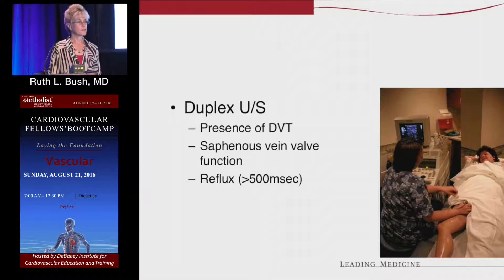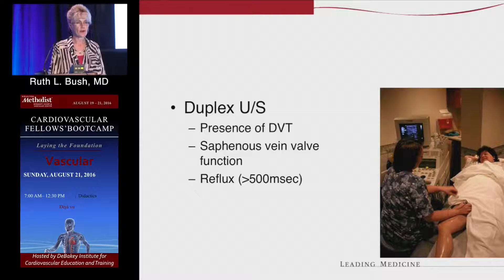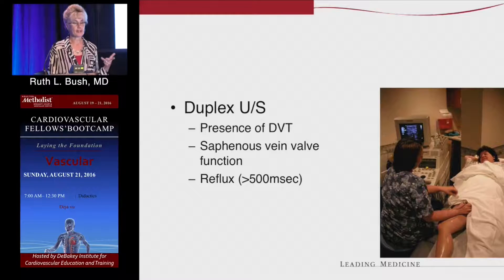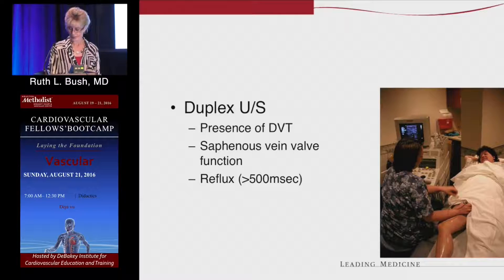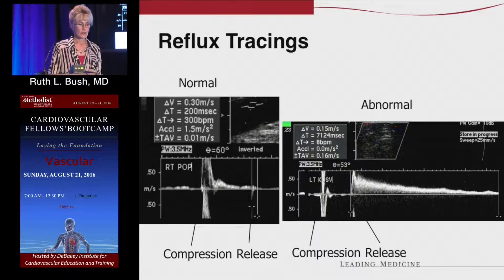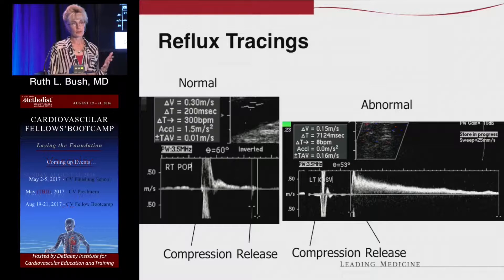You mainly want to do a duplex ultrasound first to know your pattern of reflux, whether the patient has any thrombus in their deep or superficial system, and what veins are refluxing — saphenous veins, small saphenous veins, deep system, accessory veins. Insurance companies want to know how much reflux, and we consider normal reflux less than half a second — 500 milliseconds. Some companies require you to submit your reports, some want pictures, and some just go on your word.